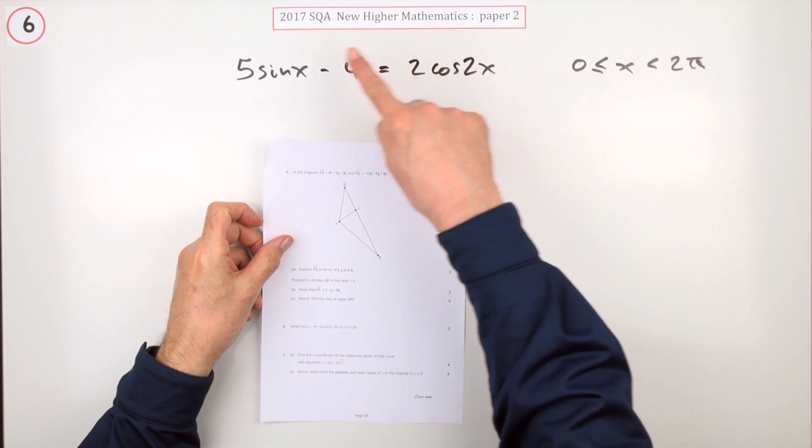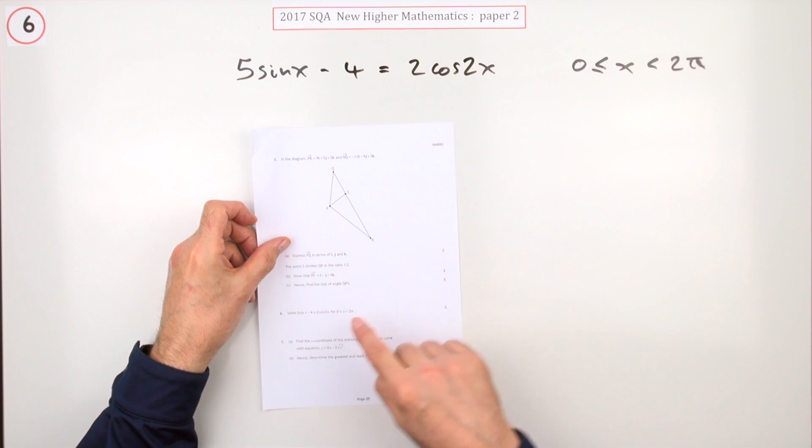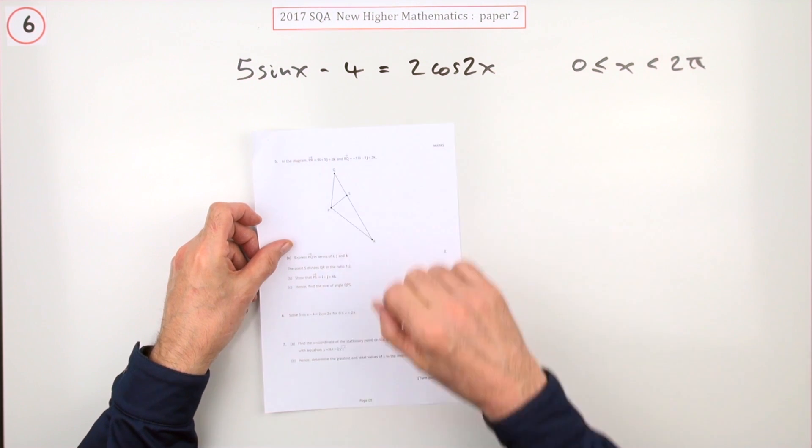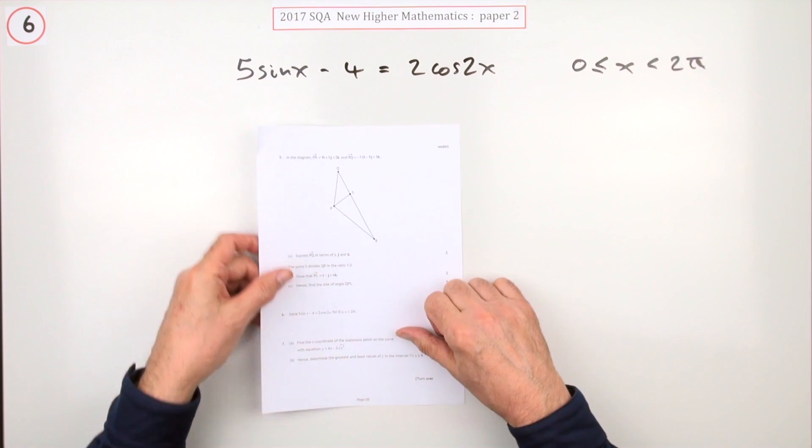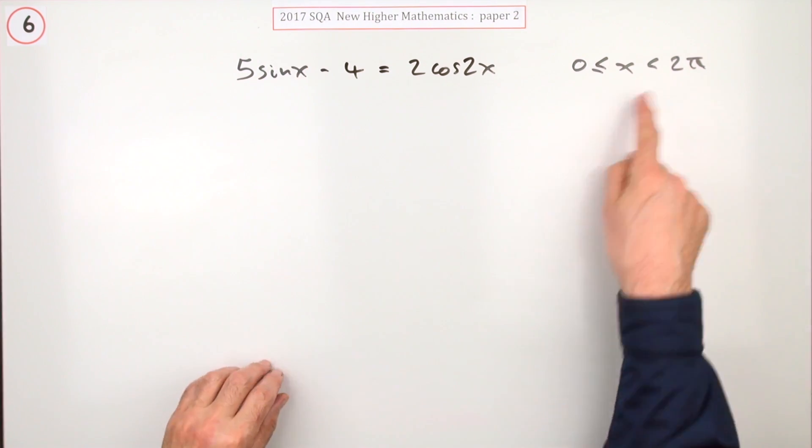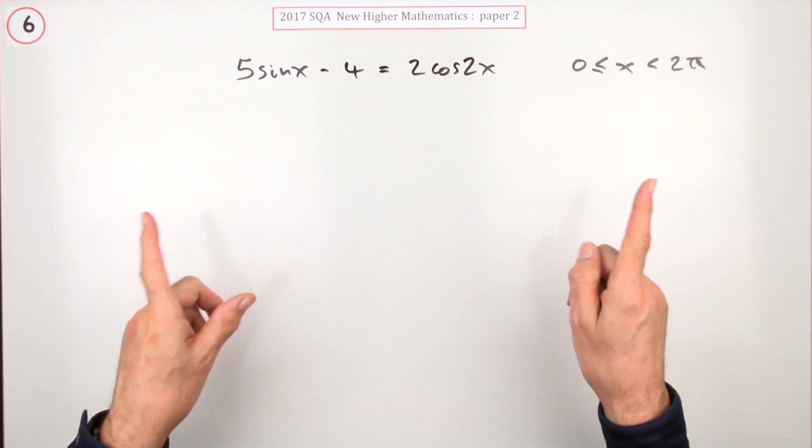Number six from paper two of the 2017 New Higher Maths. Here we go, the double angle equation for five marks. Notice though it's in radians, no degree signs—this confirms it here. Best thing to do is just put your calculators into radians to begin with.